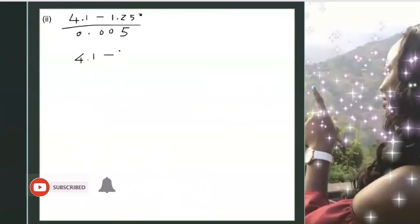Now remember square means you're multiplying it. So we're multiplying it 2 times. So it means 1.25 times 1.25.